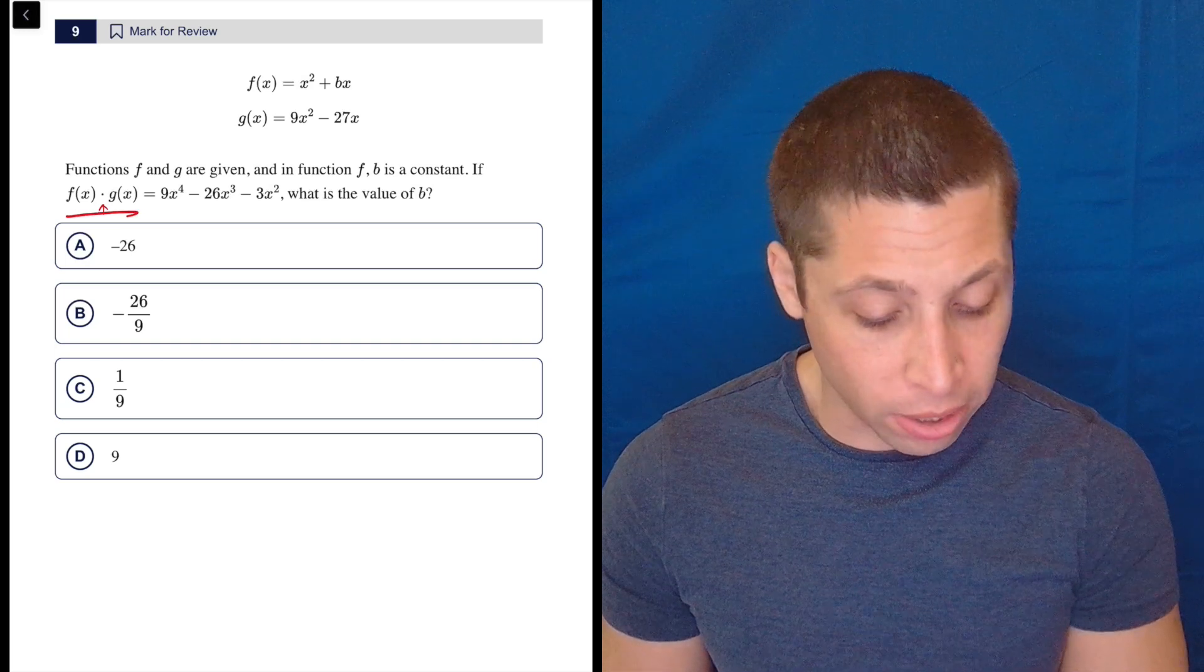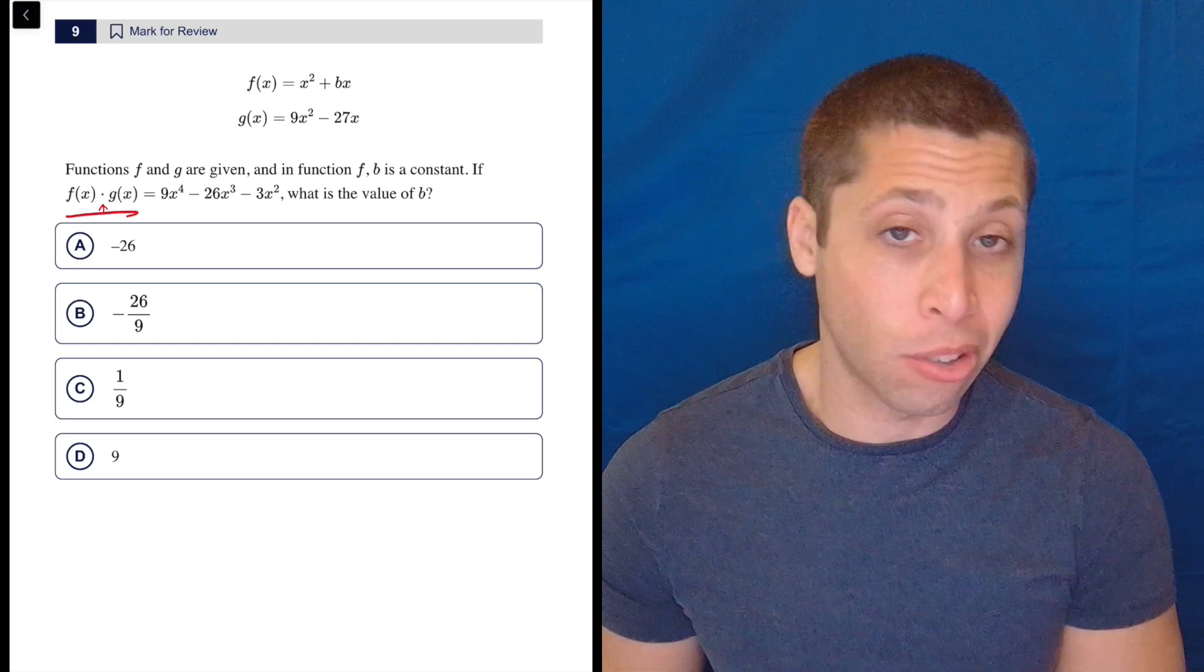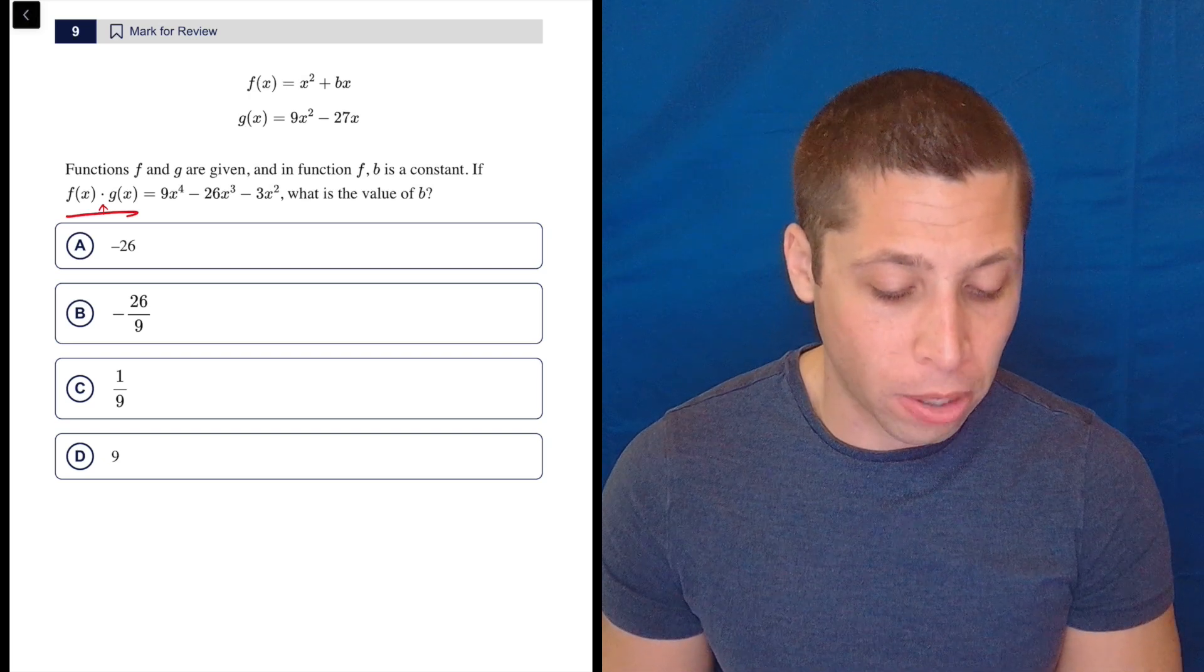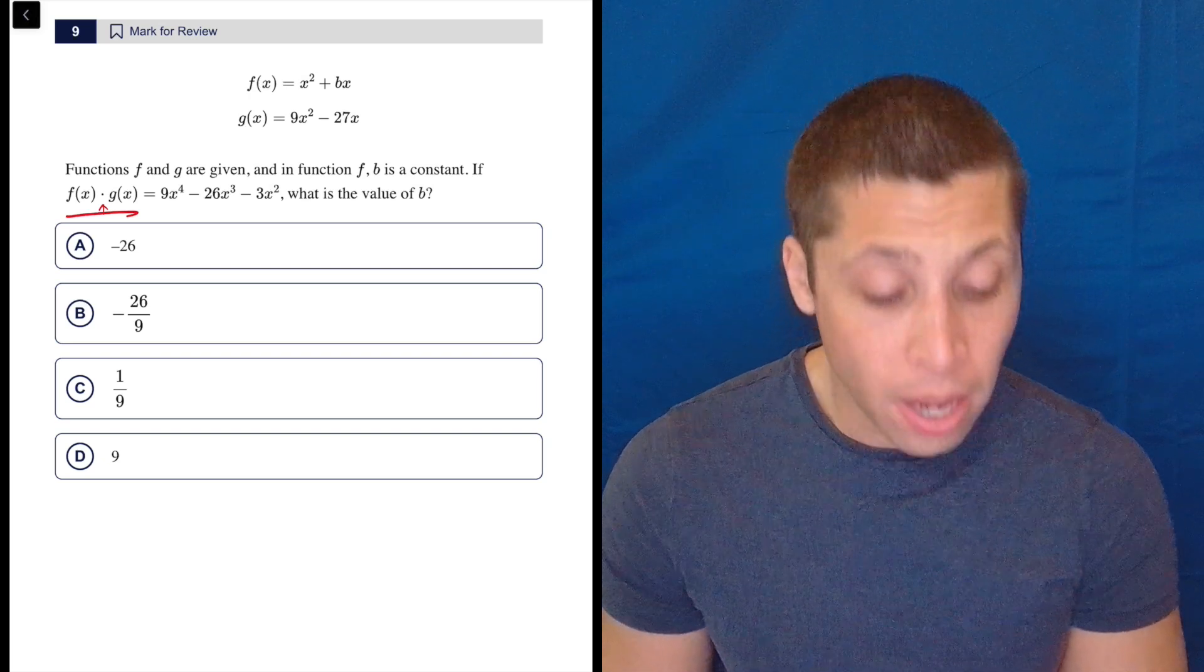but that's our multiplication dot. So for functions f and g are given, and in function f, b is a constant, so we're going to try to find that. If f(x) times g(x) is equal to 9x^4 minus 26x^3 minus 3x^2, what is the value of b?